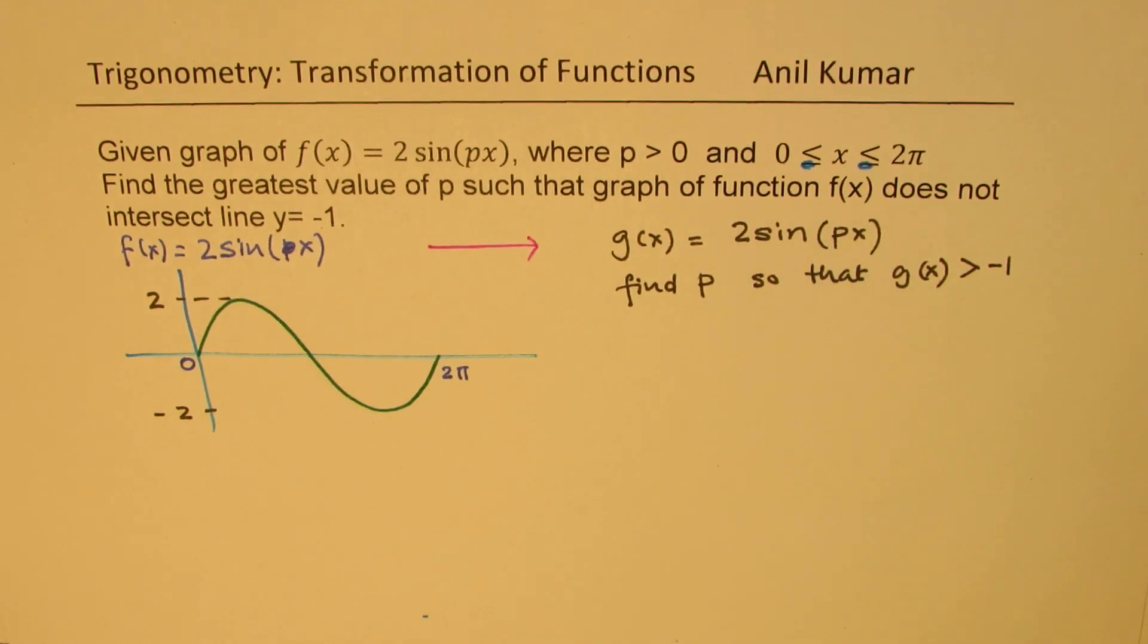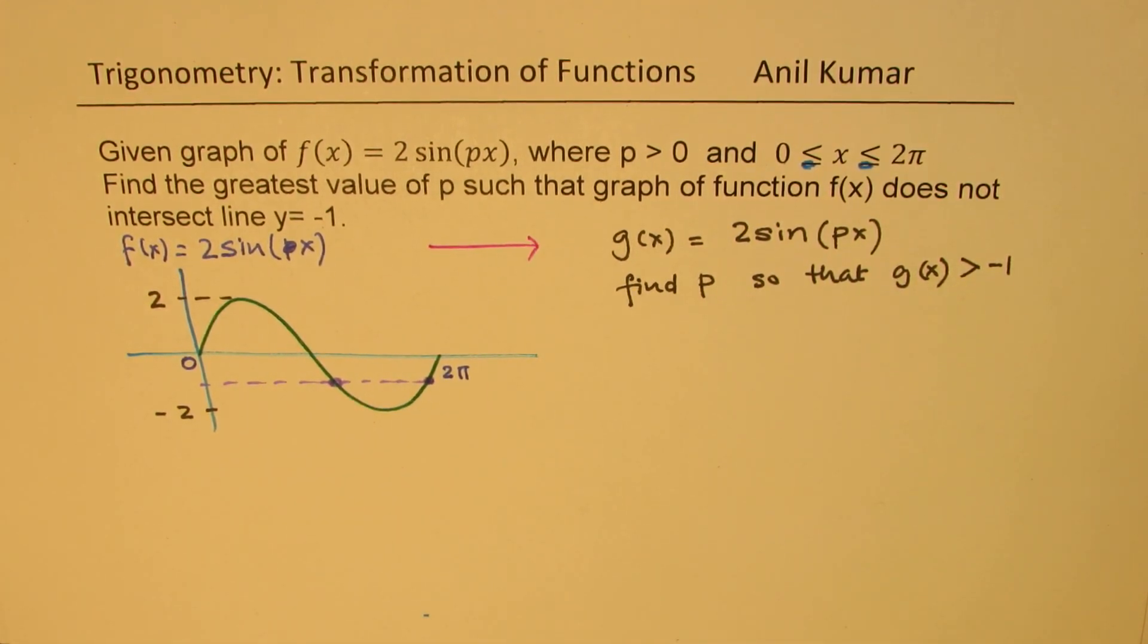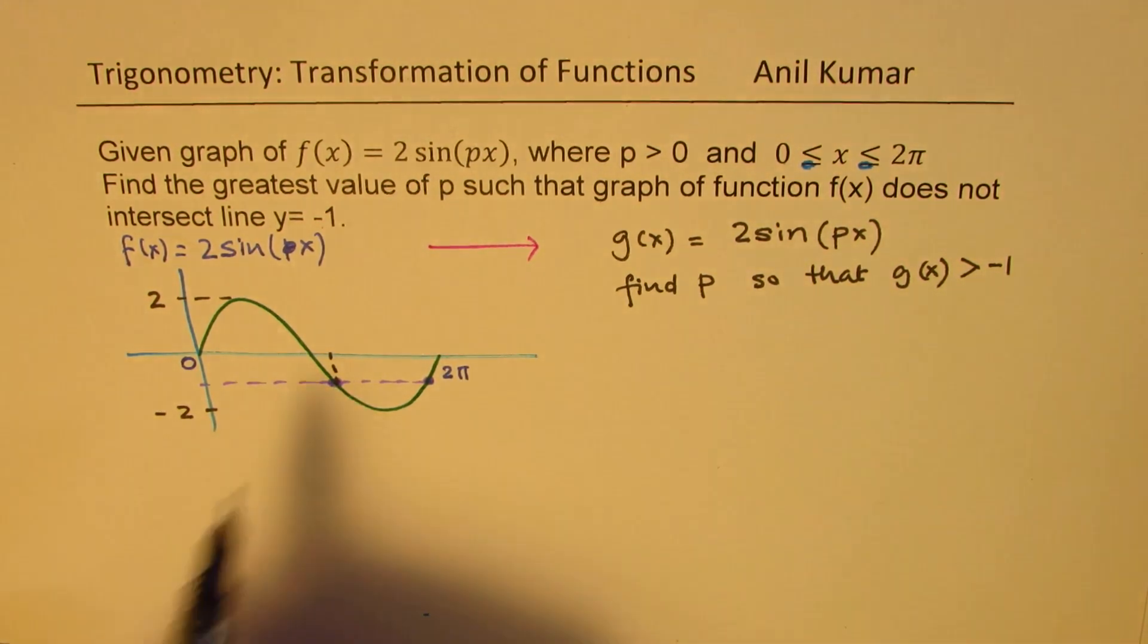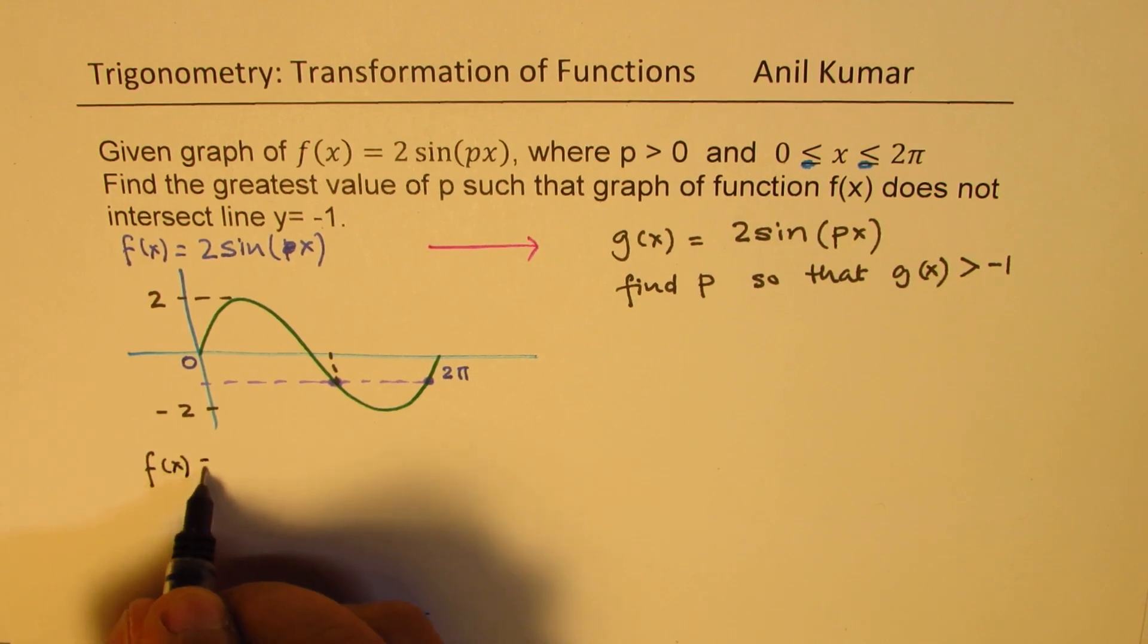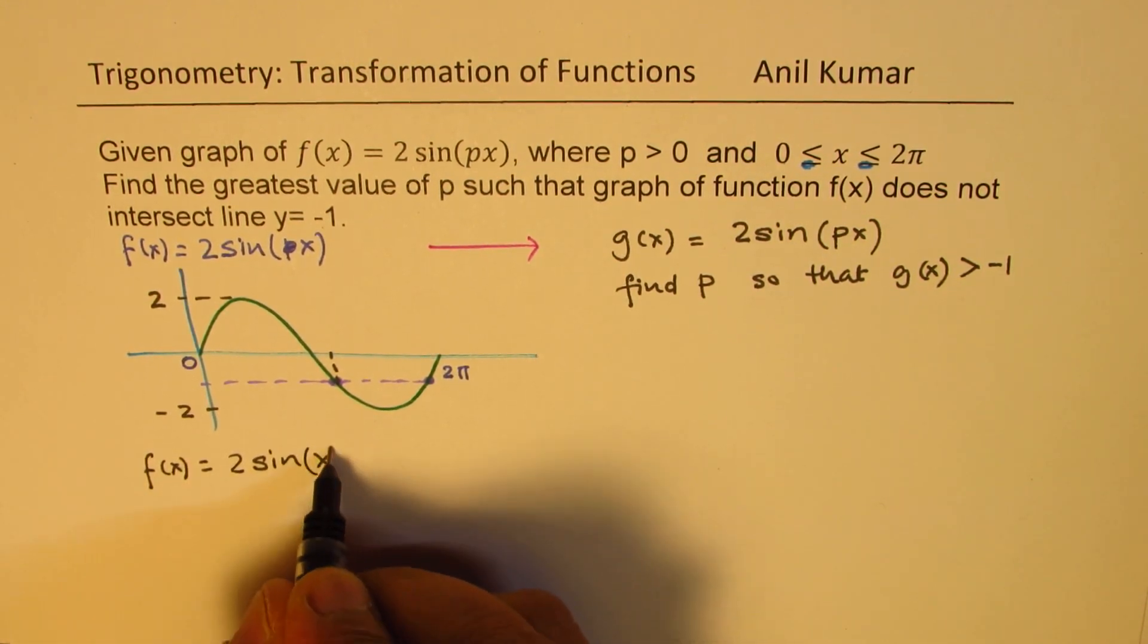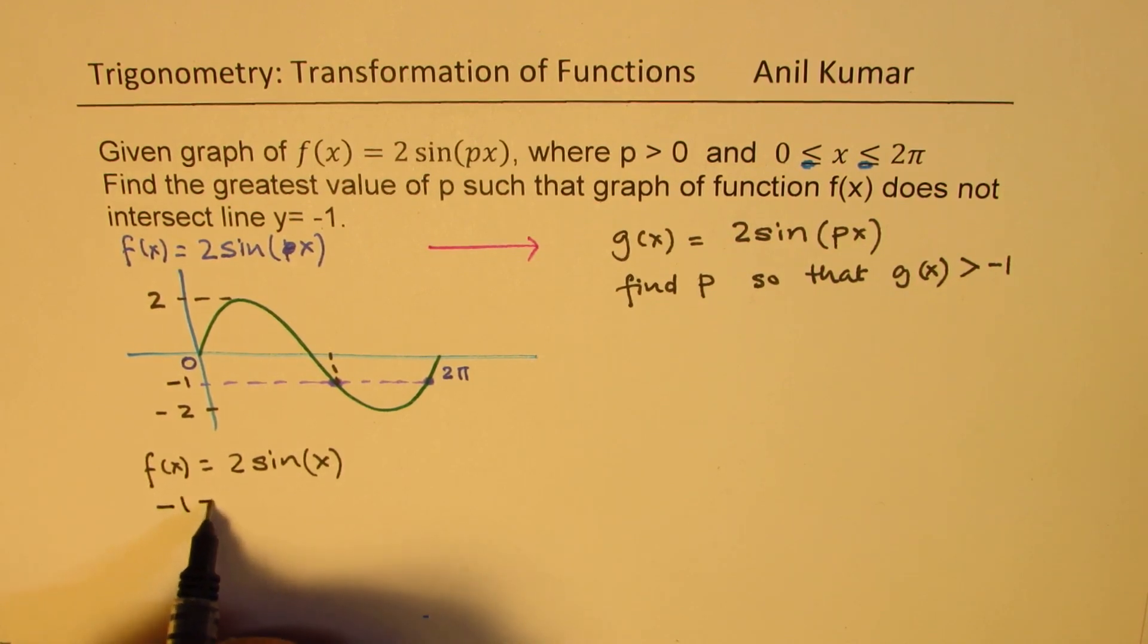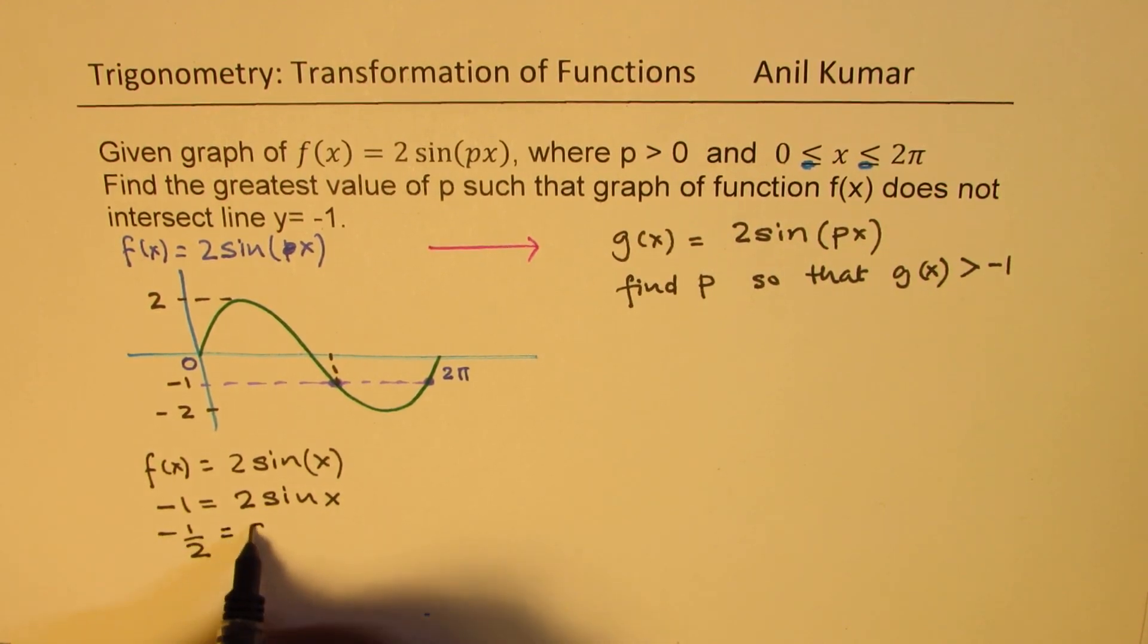Conceptually, what we can see here is that at minus 1, the graph will have intersection points. So in the first phase, we will try to figure out what this point is. So that is to say, in the function f(x) equals to 2 times sin(x), we will try to figure out when is this function equal to minus 1. Substituting minus 1 here, we can calculate this value. We get 2 sin(x), which is minus half equals to sin(x).